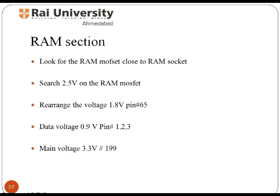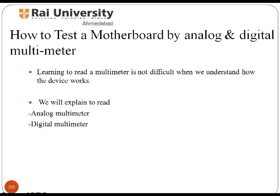In the RAM section — random access memory module — you will find RAM MOSFETs near the RAM socket with pin numbers marked on them. Search for 2.5 volts on the RAM MOSFET. The next step is to measure the voltage at pin number 65. Then search for the data voltage and main voltage on the respective pins.